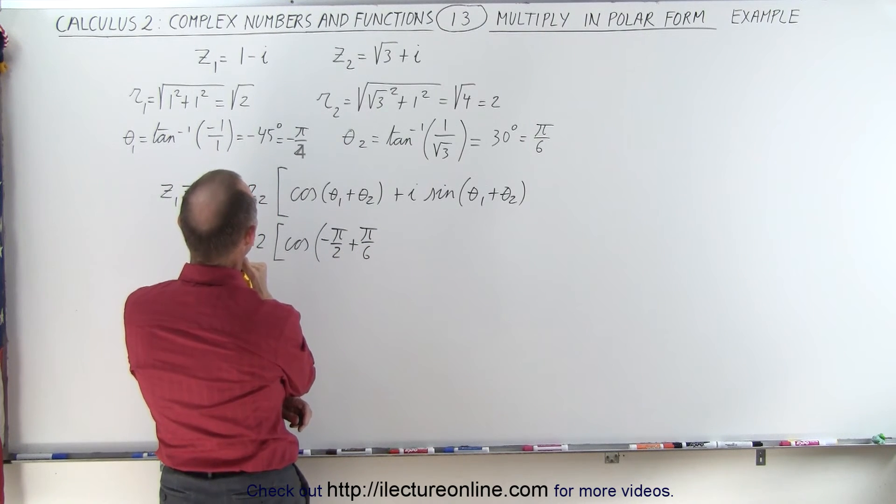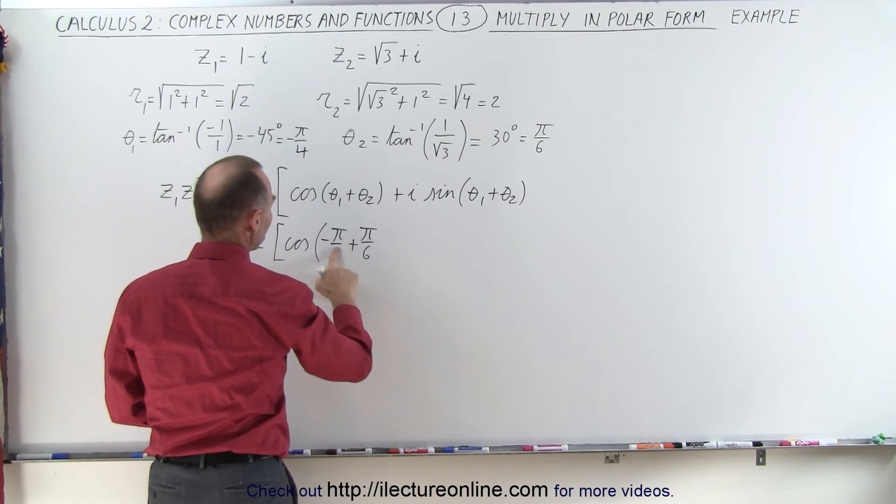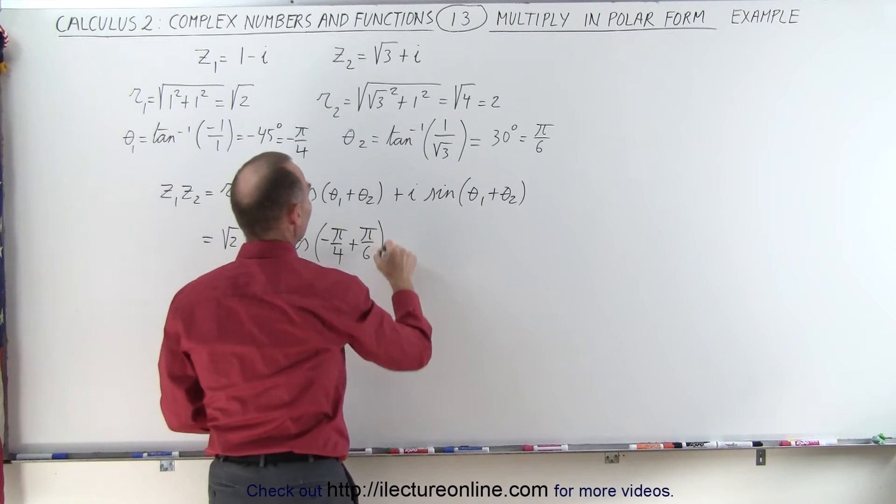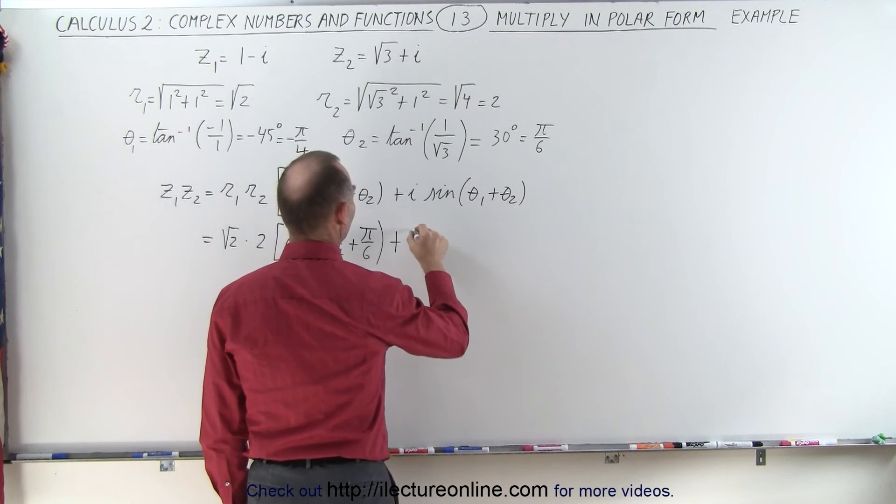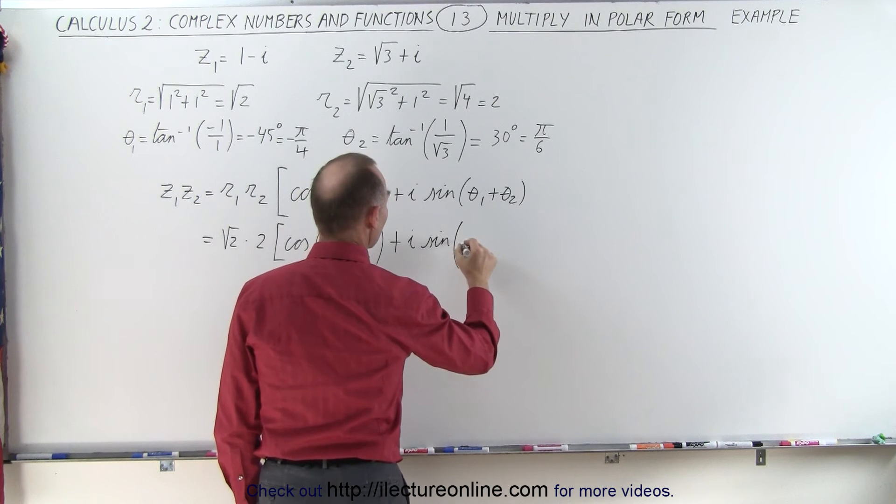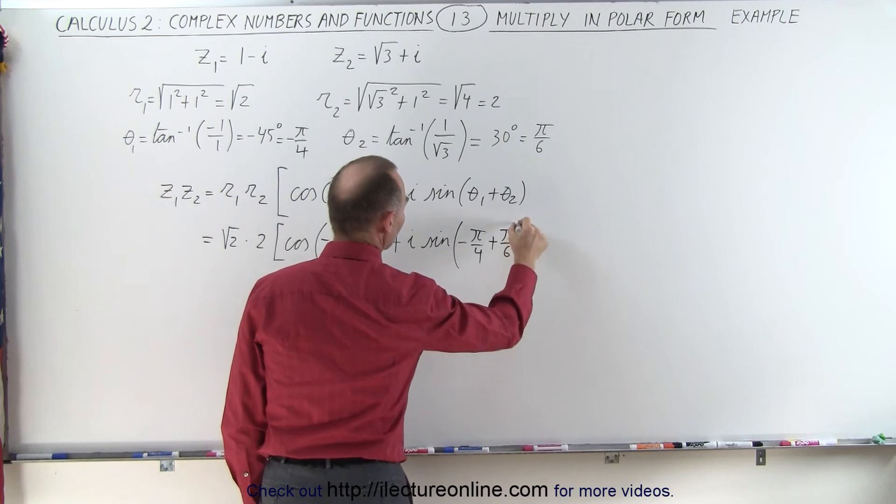Wait a minute, that's not pi over 2, this is pi over 4. Oh, don't want to do that, pi over 4, that's 45 degrees, plus i times the sine of, and again that would be minus pi over 4 plus pi over 6.